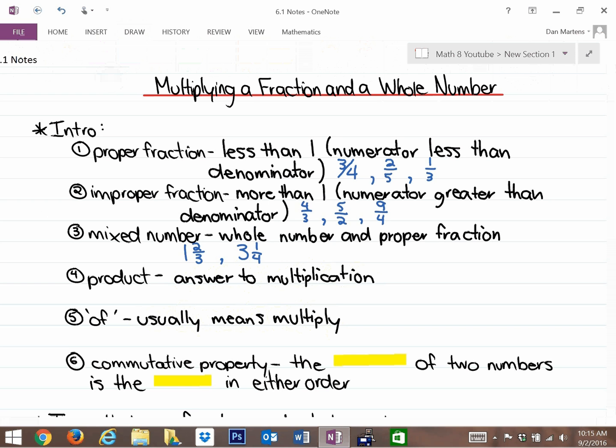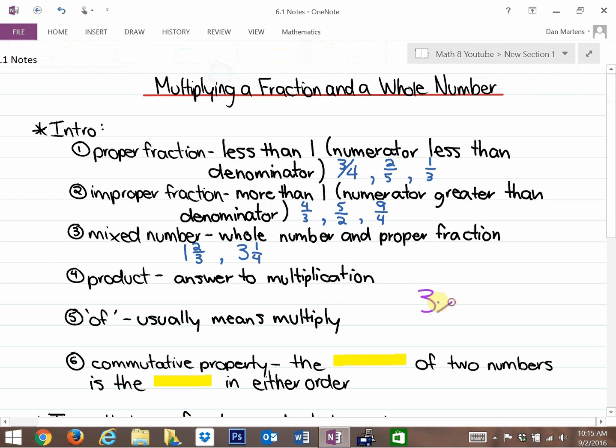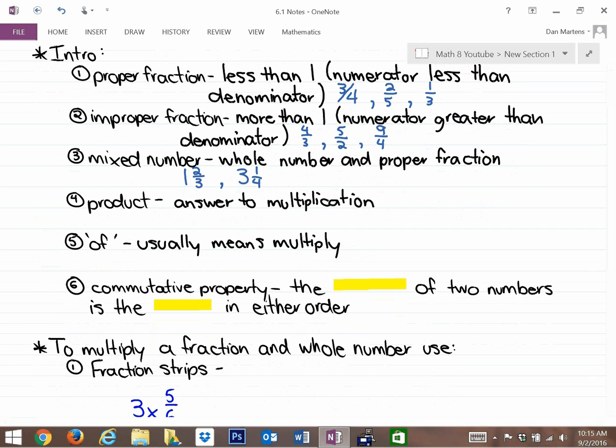And the last thing is something called the commutative property. The commutative property applies to multiplication. It's saying that 3 times 2 is the same as 2 times 3. You're more than welcome in multiplication to change the order. The order doesn't matter. That's the commutative property, which is not true for some other operations. But for multiplication, you can change the order and you will get the same result, which is helpful in some cases throughout this assignment.